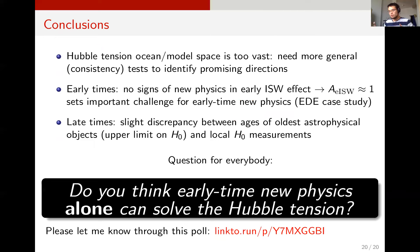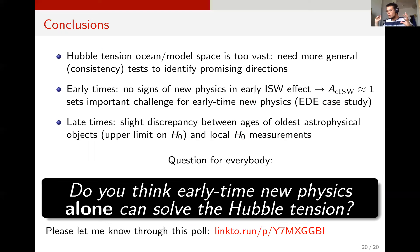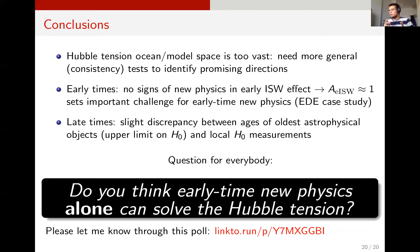Let me now draw concluding remarks. The Hubble tension model space is extremely vast, and this motivates more general consistency tests to identify promising directions. At early times, there's no sign for new physics in the early ISW effect, which is one of the places where early time new physics should show up most clearly. At late times, there's a slight discrepancy between the ages of the oldest astrophysical objects and local H0 measurements.